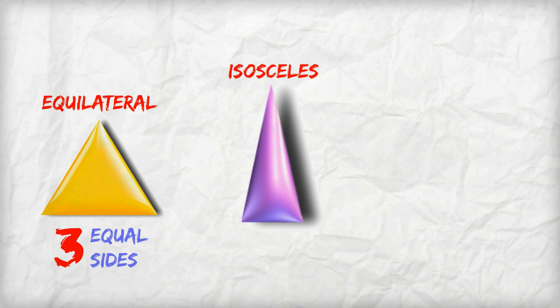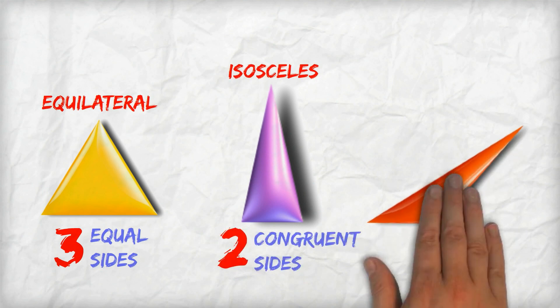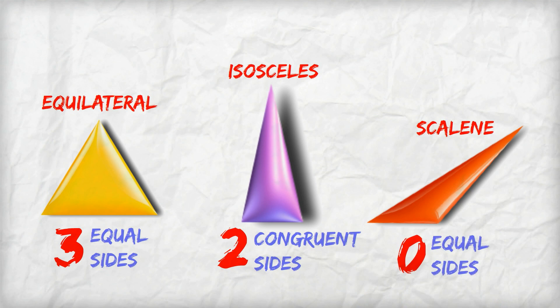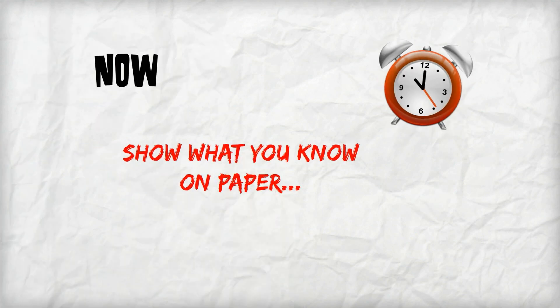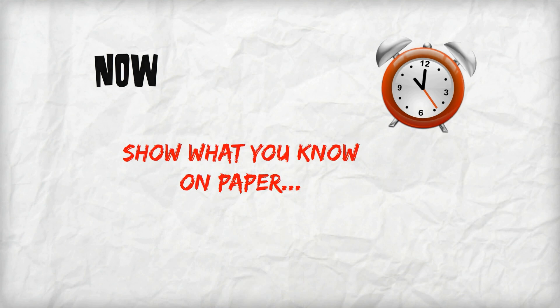The isosceles has two congruent sides, and the scalene triangle has no sides the same. No equal sides, no congruent sides. Now it's time for you to show what you know on paper.